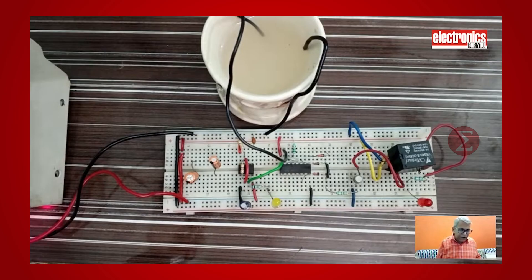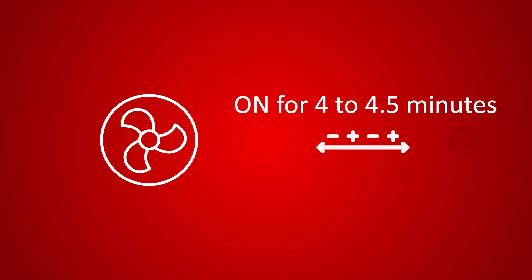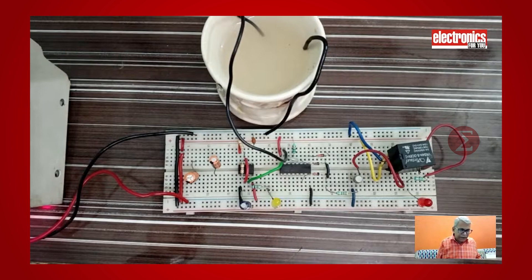Using this simple circuit, you can save your cooler pump in two ways. One is the cooler pump is turned off if the water is finished in the tank. And second is the cooler pump will not run for full time. It will be on for 4 to 4.5 minutes and off for 2 to 2.5 minutes. This way the cooler pump will work more efficiently and provide proper coolness.